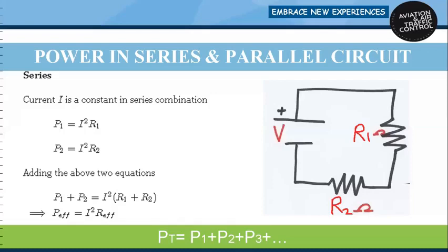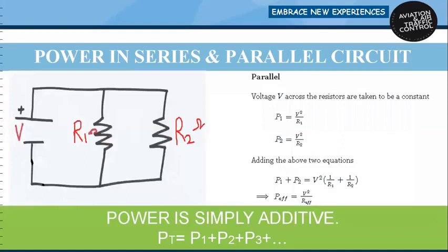If we connect more components in series, total power becomes Pt = P1 + P2 + P3 and so on. The same derivation applies for the parallel circuit. In a parallel circuit, we know that the voltage across all resistances is constant.